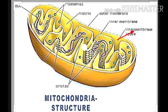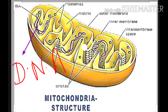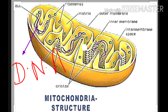Inside the inner chamber of the mitochondria, a jelly-like substance called the matrix is present. Mitochondria also contains its own DNA and its own ribosomes, so it can synthesize its own proteins.